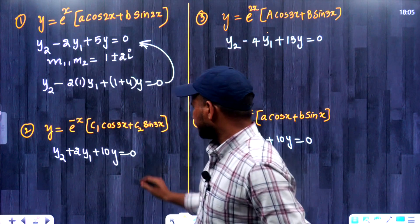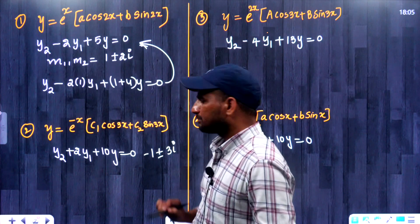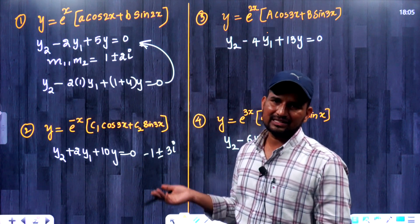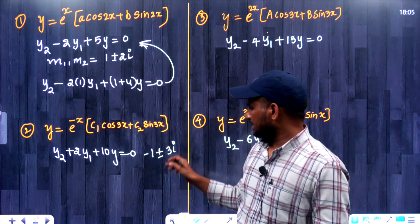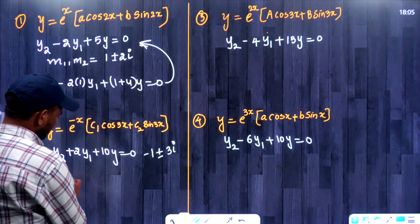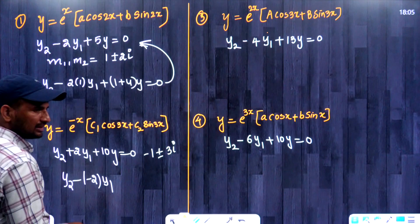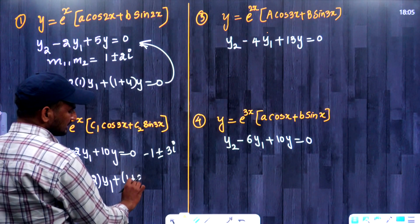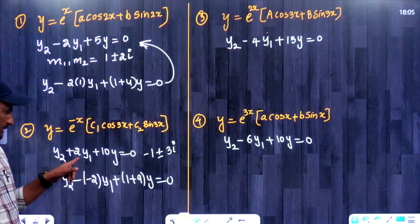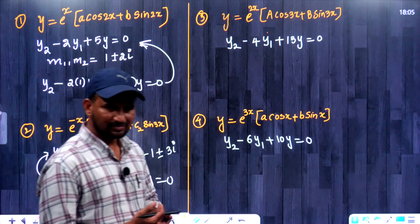The roots in the next case are minus 1 plus or minus 3 iota. Adding these, the imaginary parts cancel, giving 2 times minus 1, which is minus 2. So y2 minus (minus 2) y1 plus (1 squared plus 3 squared) y equals 0, that is y2 plus 2y1 plus 10y equals 0. This matches our answer. Quite easy — if you practice, you can answer in a single step.